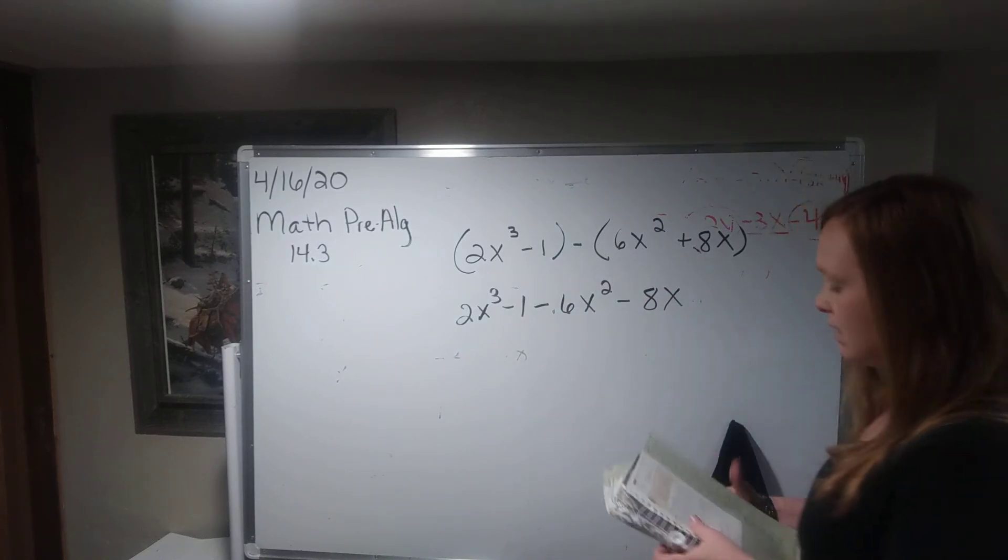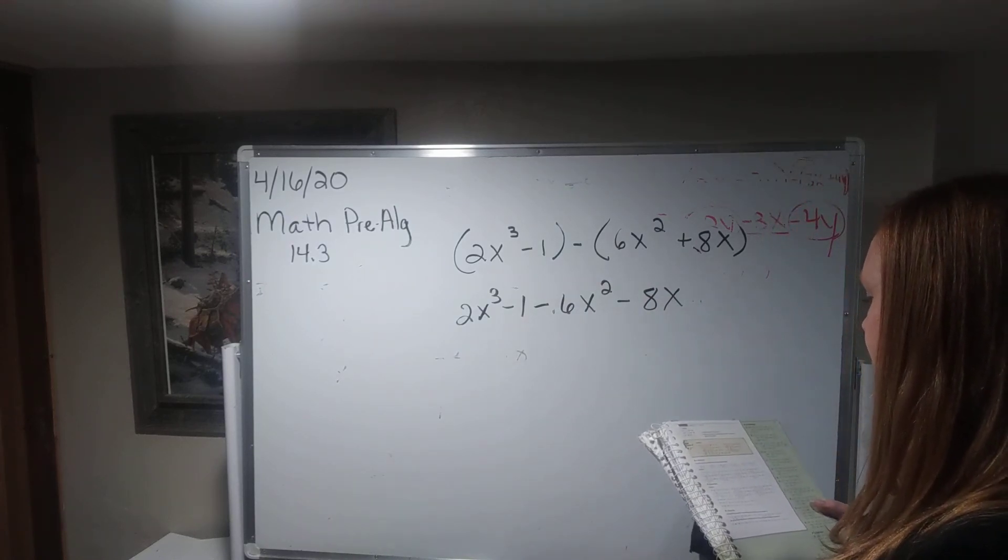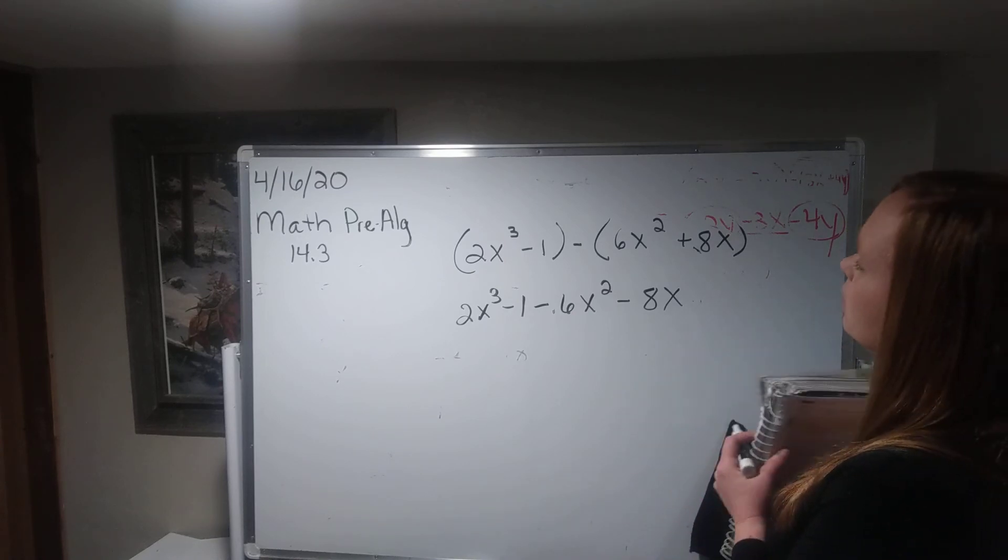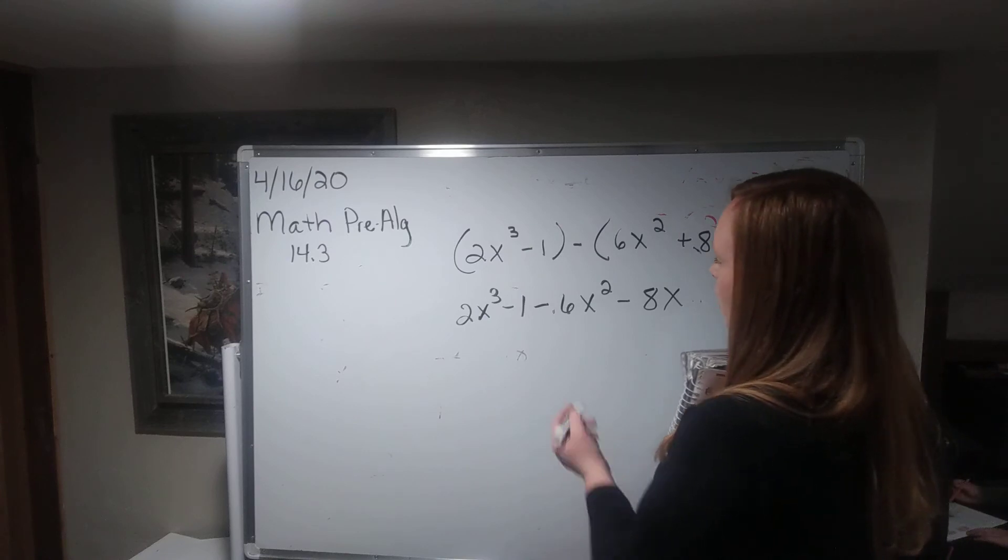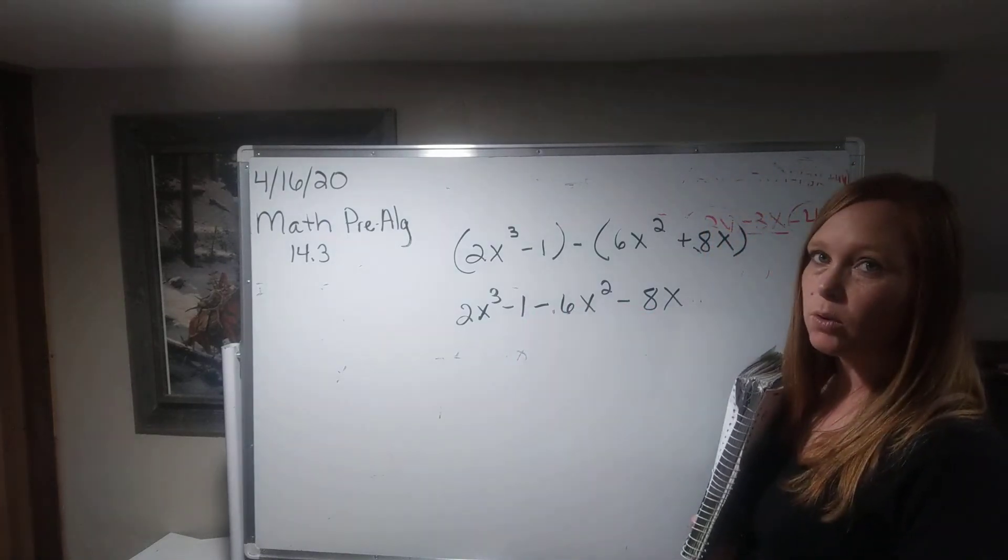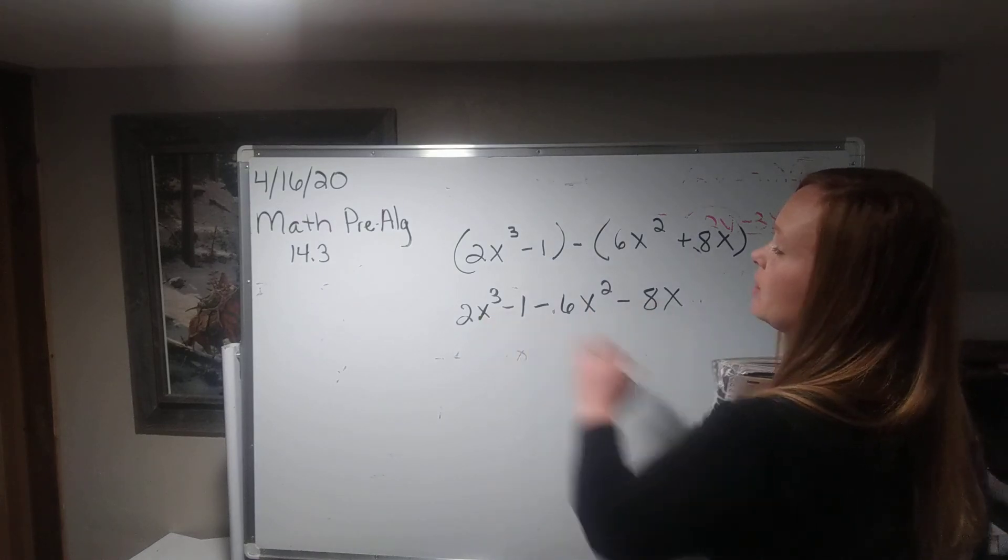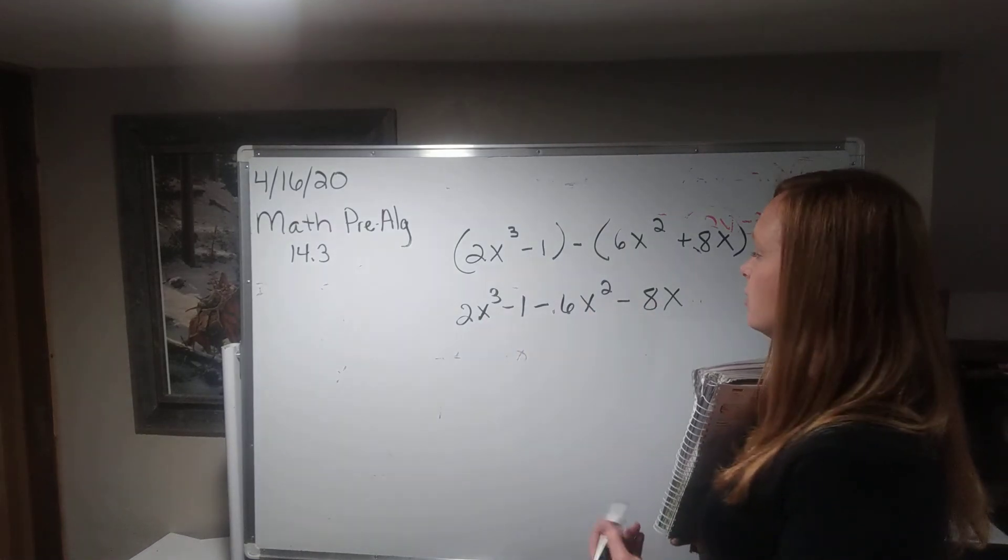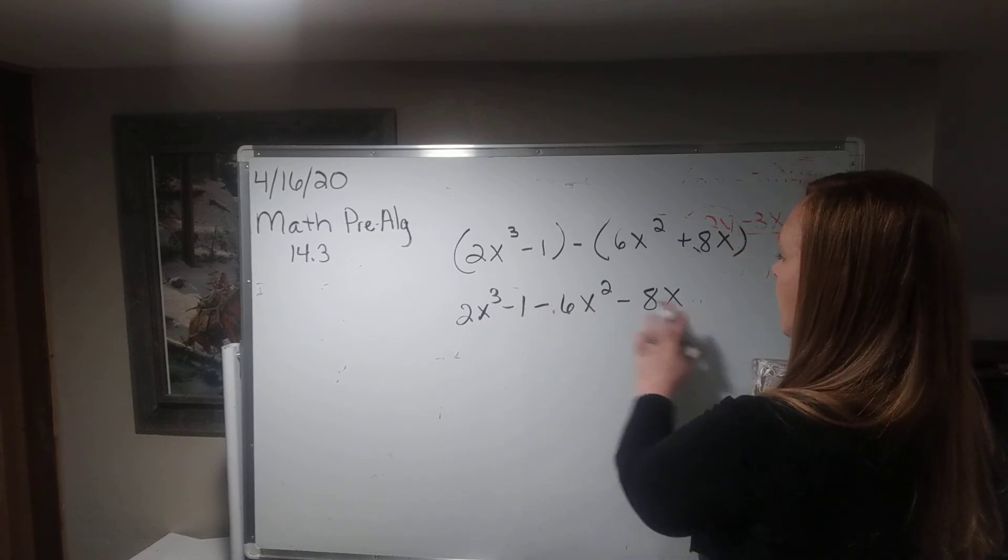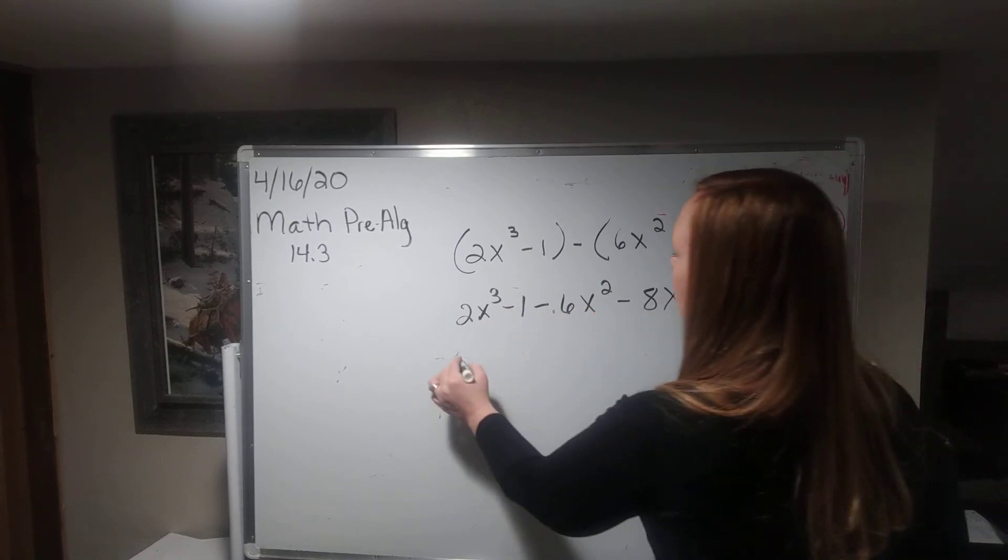Okay. In this case, you'll see that when we do this, we can't combine anything. But it is out of order. So the correct, this would not be the correct answer. The correct answer is even though I cannot combine anything because I have an x cubed, an x squared, an x, and a 1, I do need to put them in the correct order.